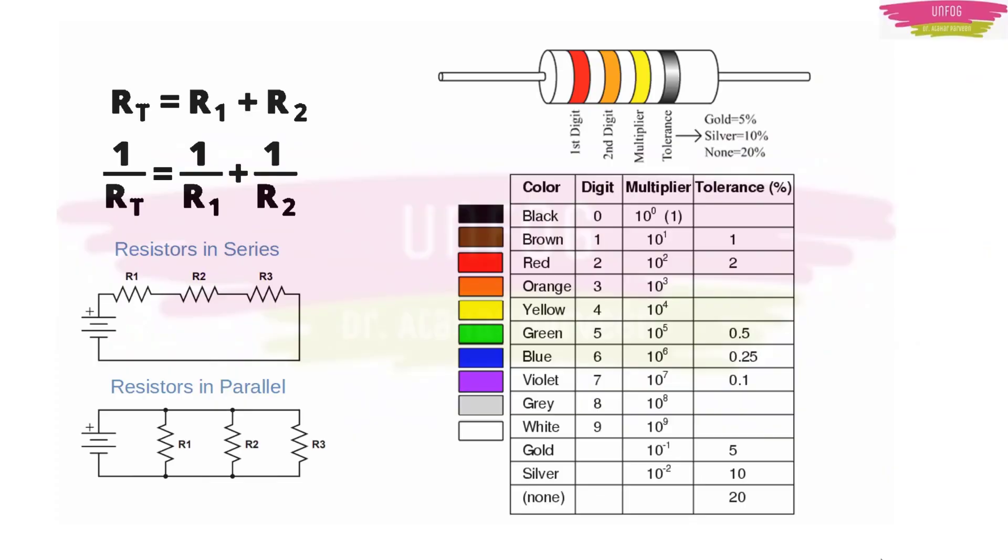And a few more important points from which you can expect direct questions. One is about the series and parallel resistors. If the resistors are connected in series, then you have to just sum them up. And if they are connected in parallel, then you have this formula: 1 upon R effective is equal to 1 upon R1 plus 1 upon R2 plus 1 upon R3 and so on.